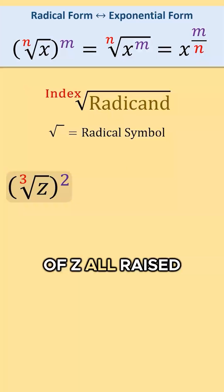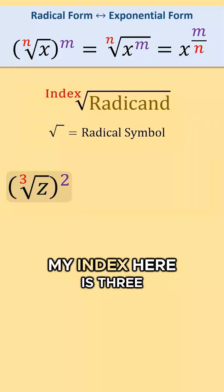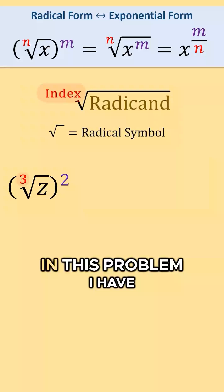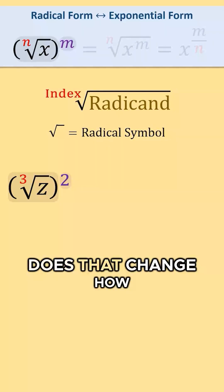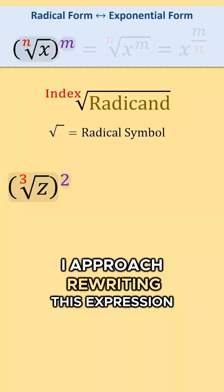Consider the cubed root of z all raised to the second power. My index here is 3. In this problem I have my radical all raised to a power. Does that change how I approach rewriting this expression?